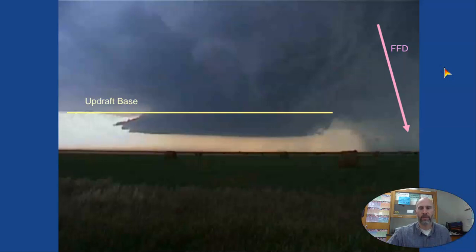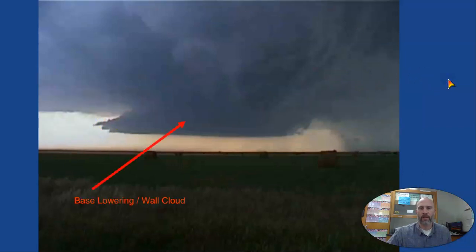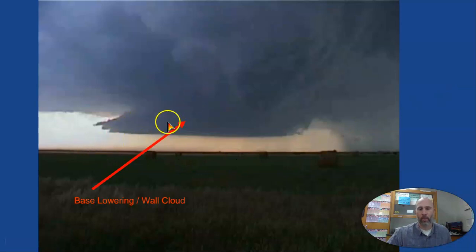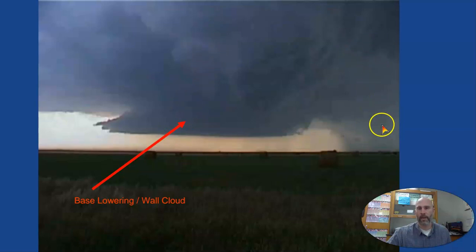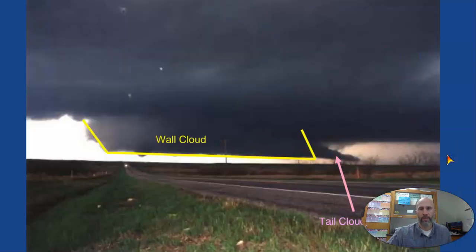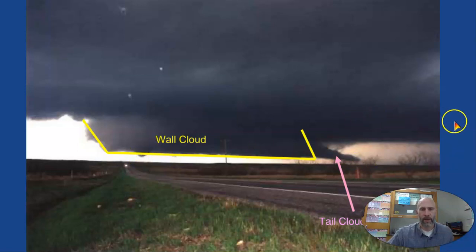Here's a close-up view of what's going on underneath a storm during a tornado. There's the updraft base where the air is coming in, and you can see the wall cloud — that's where the warm air is getting pulled up through the center. You can see rain on the side where the cold downdraft is coming down. We get that wall cloud formation, and you can start to see a little bit of a funnel at the bottom.